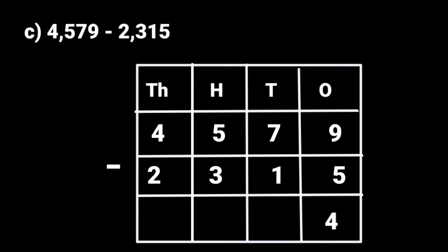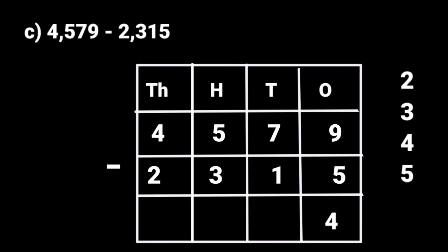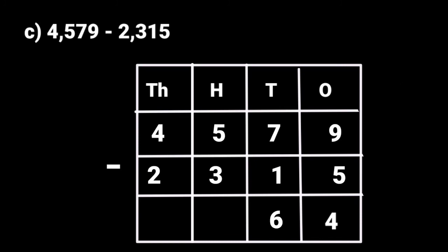Next move to the 10's place: 7 minus 1. Now we can subtract 1 from 7, so the answer is 6. See the 100's place: 5 minus 3. Now we can subtract 3 from 5, so we get the answer 2.